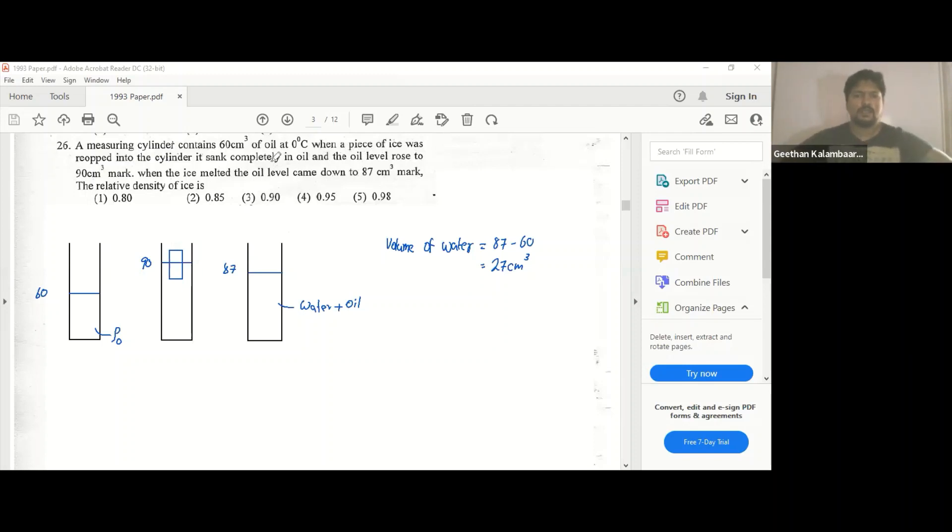So how do we get an equation from this? That's the problem. And they don't ask us to find anything else but relative density of ice is what they want us to find.